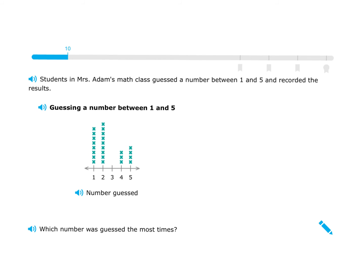Here comes another question with a different data set. Students in Mrs. Adams' math class guessed a number one through five and recorded their results. The x-axis goes one through five because those are the numbers they could choose. The question is: which number was guessed the most times? They're asking for the largest pile of data, which happens to be number two.